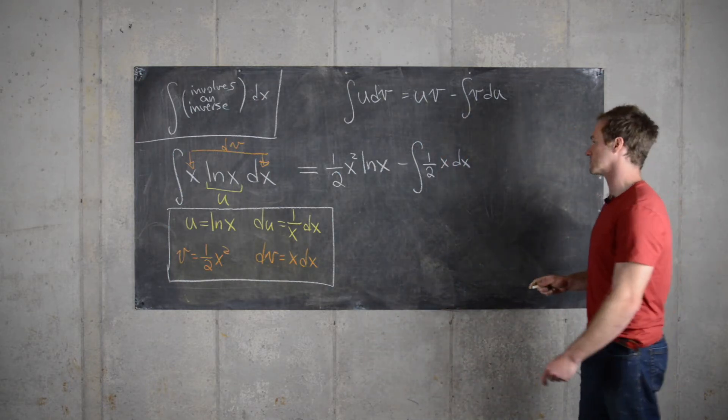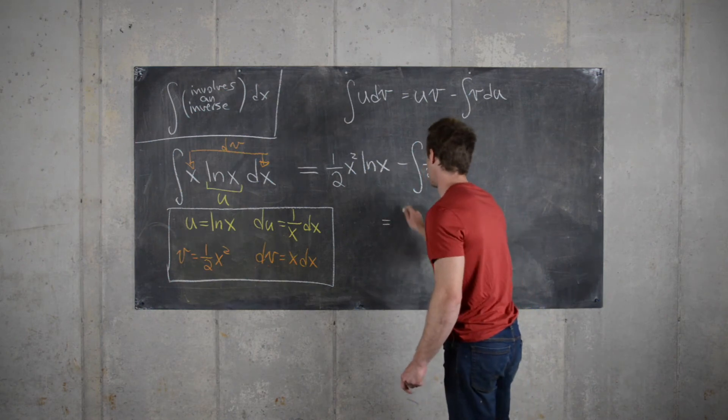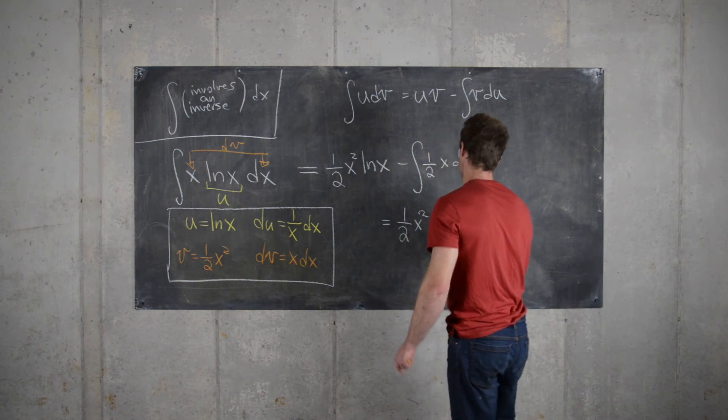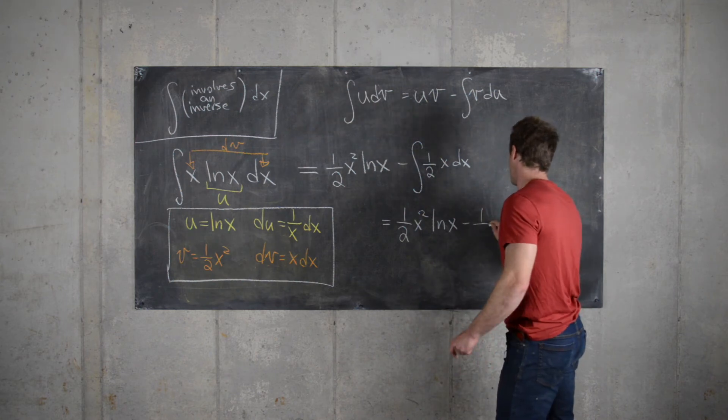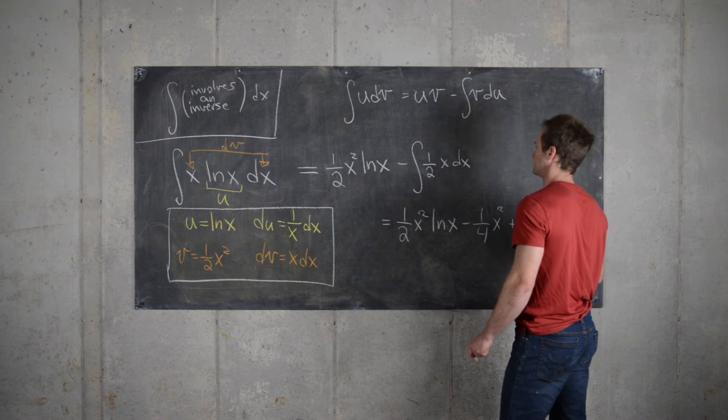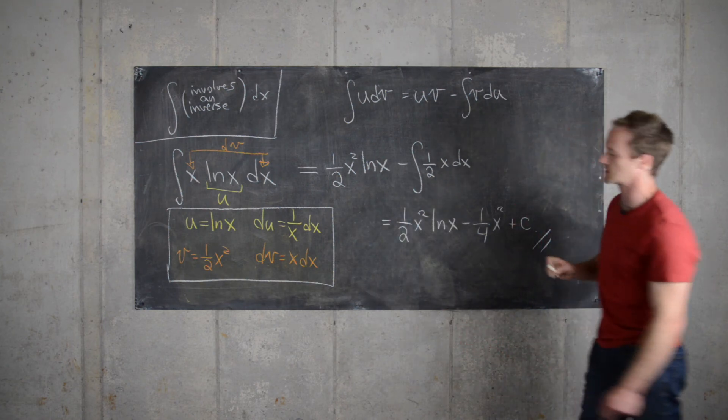And now we're left with a pretty simple anti-derivative. So that leaves us with 1 half x squared natural log of x minus 1 quarter x squared plus a constant. And that's our final answer.